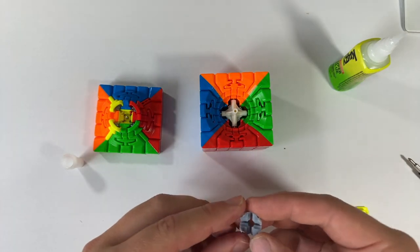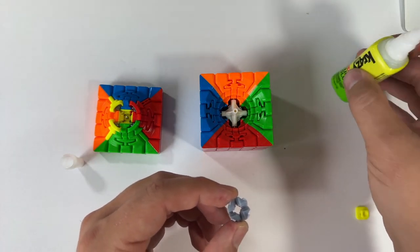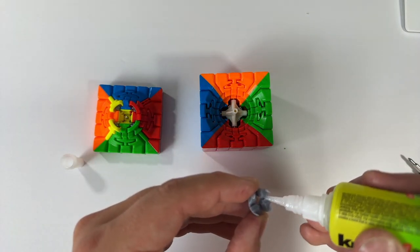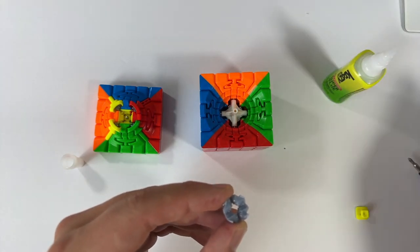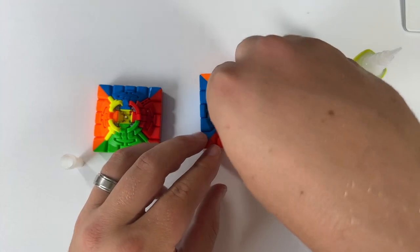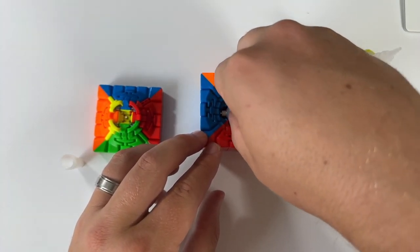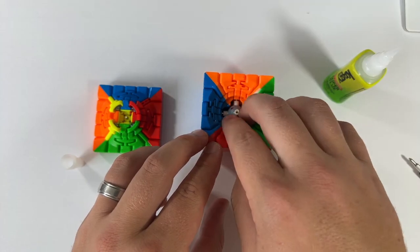The last piece to install is the other half of the magnetic core. Verify that the pegs will fit properly into the installed half of the core. Then apply glue to each axis like we did previously and apply pressure, ensuring that it fits snugly against the installed piece and the cube core.